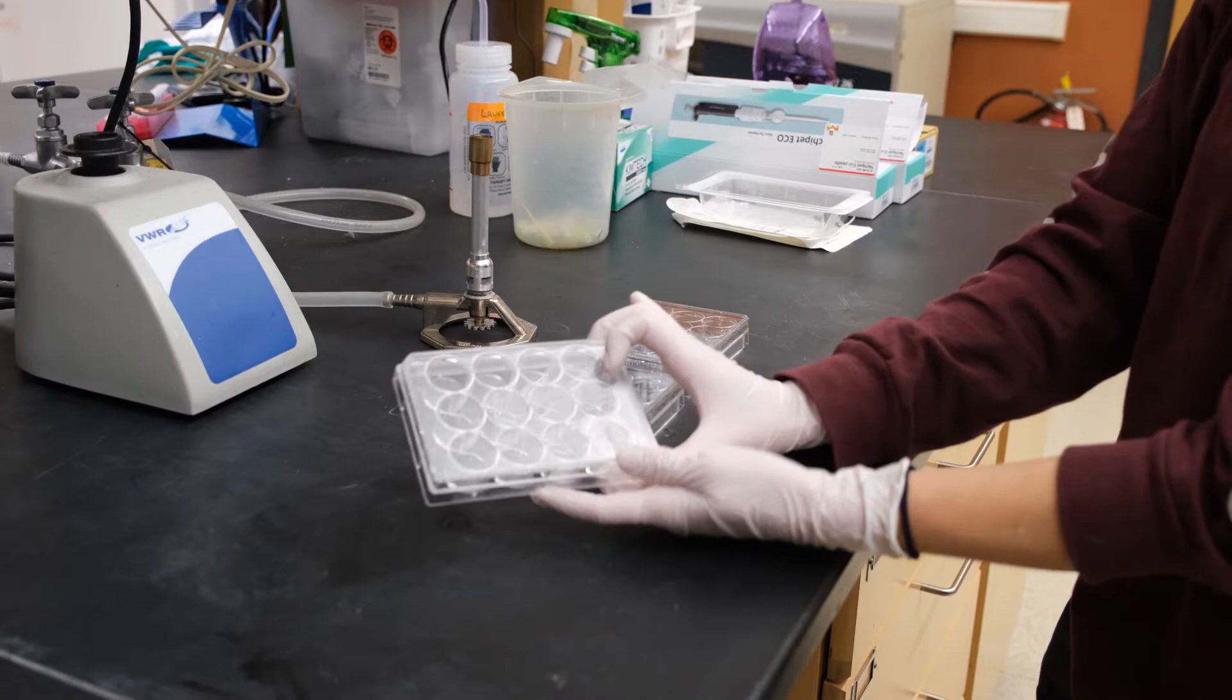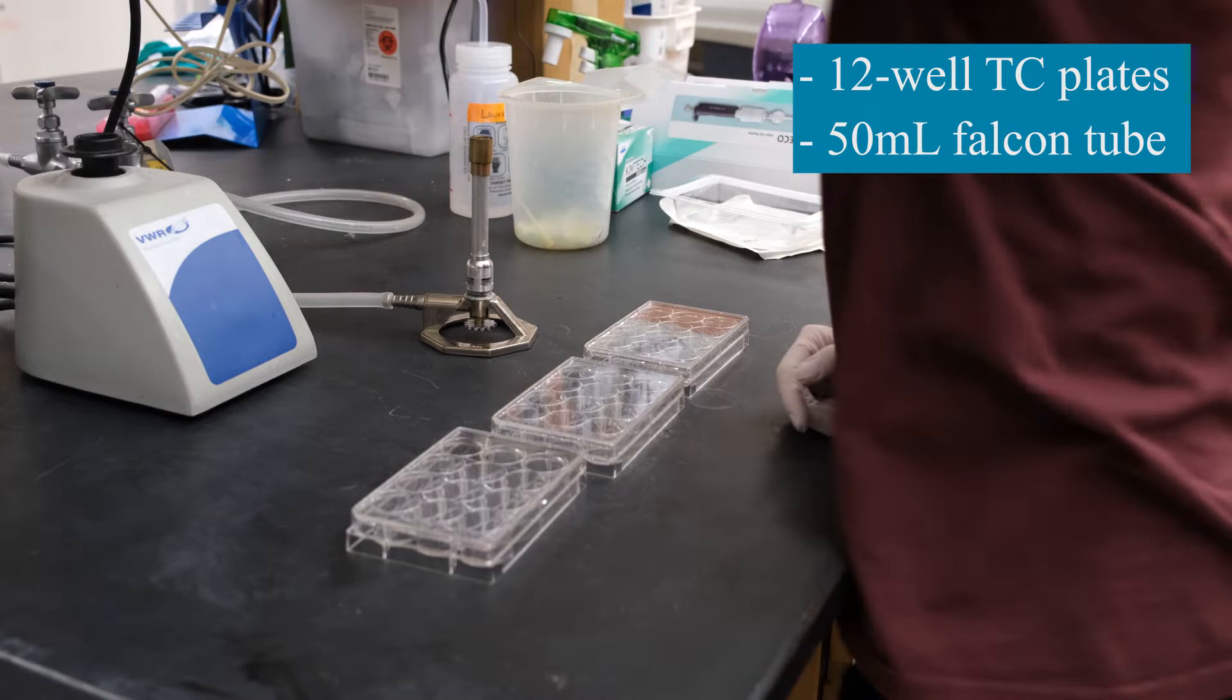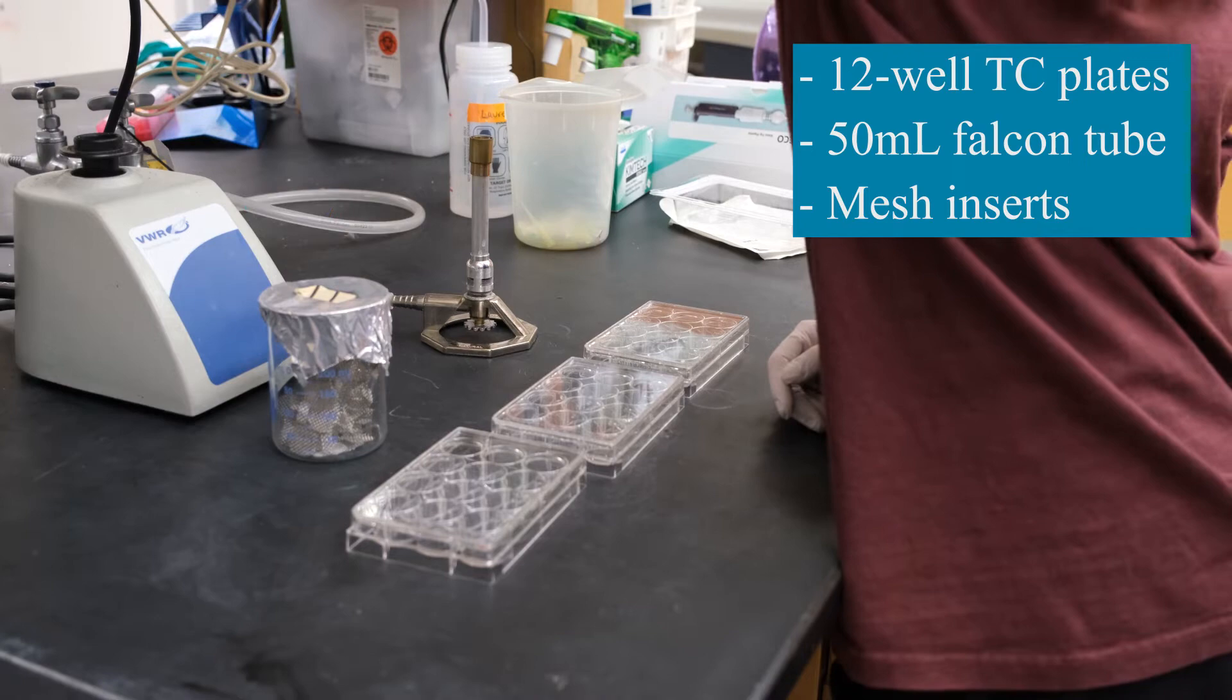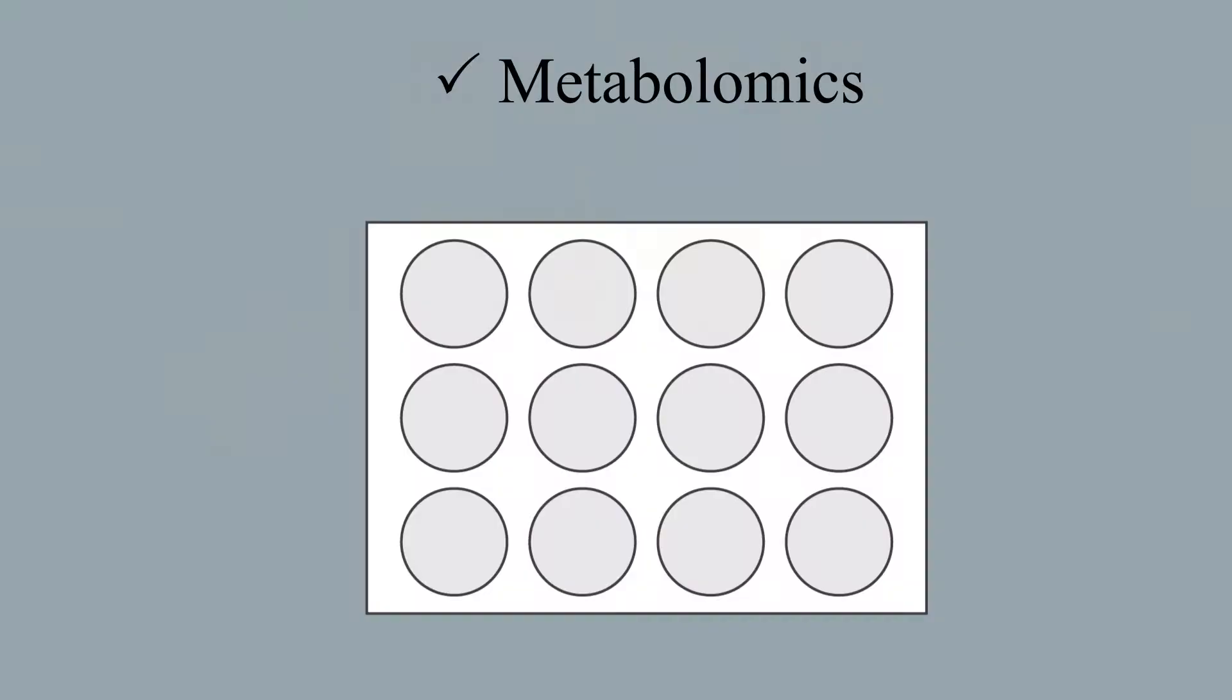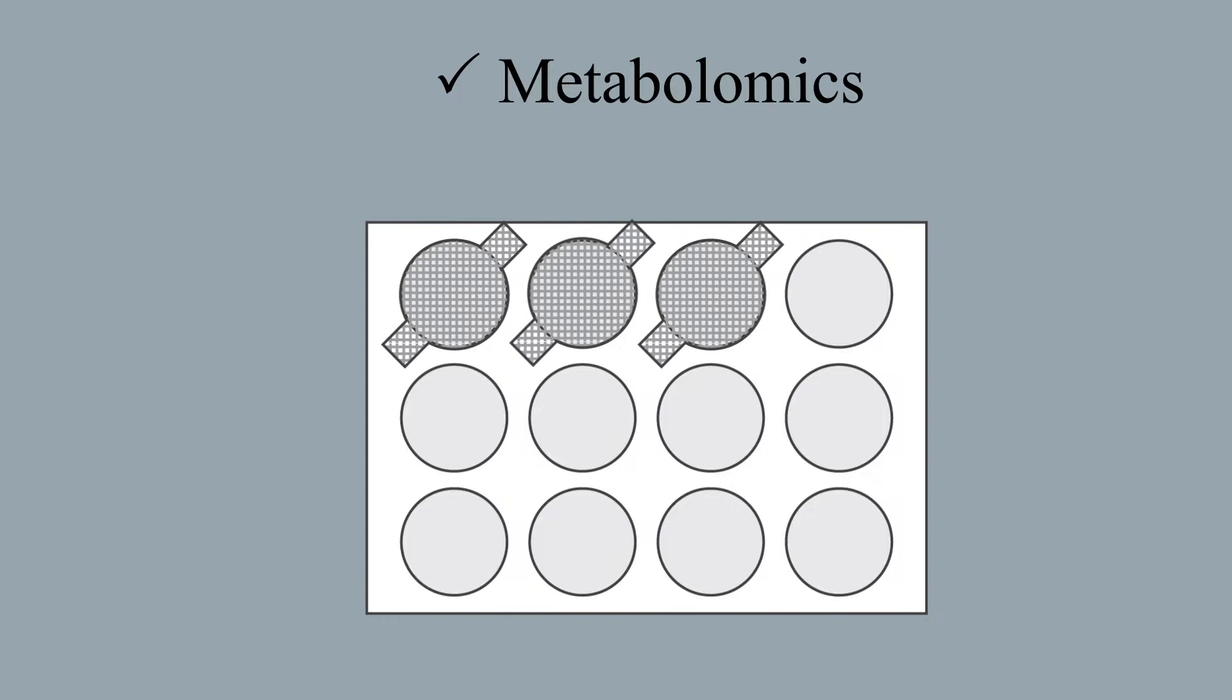While cultures are growing, we'll prepare our 12 well plates. For this you'll need sterile 12 well tissue culture plates, non-treated, a sterile 50 ml falcon tube, metal mesh pre-cut to fit into the wells of the plates and autoclaved. You'll also need forceps, a 5 ml pipette and tips, and a marker.